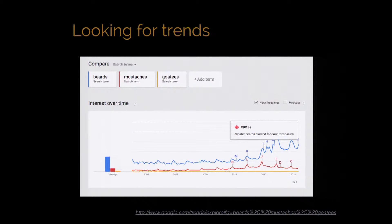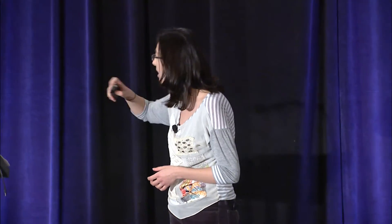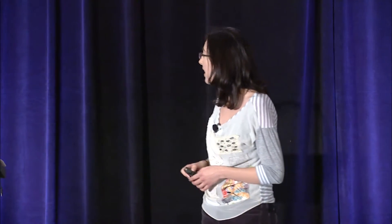Google conveniently also adds little articles to various peaks and valleys to highlight things that are important. At that point in time, hipster beards were being blamed for poor razor sales—definitely an important piece of information. With this very basic technique of counting over time, we can see some potentially really interesting changes.